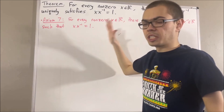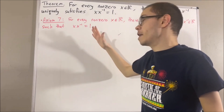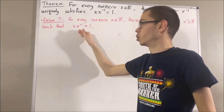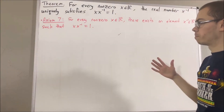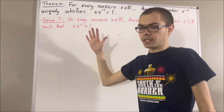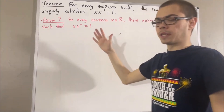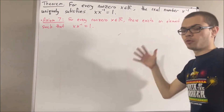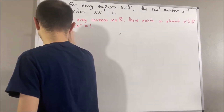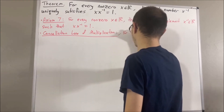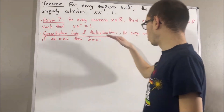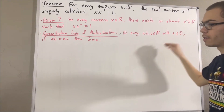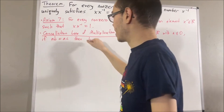And to prove that, we're essentially trying to show that if r is any real number such that x times r equals 1, then r must be equal to the reciprocal of x. So how do we prove that? Well, we're going to be using a property that we proved regarding the real number system, and that property was the cancellation law of multiplication. We proved that for every three real numbers a, b, and c with a non-zero, if ab equals ac, then b equals c.